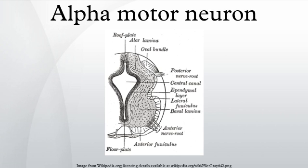The axon of an alpha motor neuron connects with its extrafusal muscle fiber via a neuromuscular junction, a specialized type of chemical synapse that differs both in structure and function from chemical synapses connecting neurons to each other. Both types rely on neurotransmitters to transduce electrical signals into chemical signals and back. Synapses between neurons typically use glutamate or GABA, while the neuromuscular junction uses acetylcholine exclusively. Acetylcholine is sensed by nicotinic acetylcholine receptors on extrafusal muscle fibers, causing their contraction.